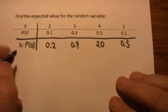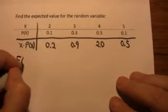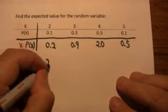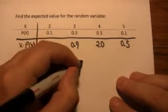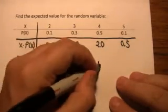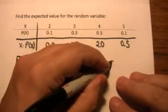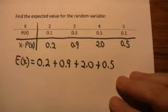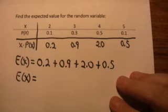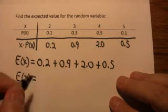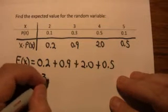Now by definition, the expected value of x is just the sum of all those products. So once you get that last row written down, all you've got to do is stick a plus sign in between all those numbers and add them up. If you don't feel confident doing it in your head, you can do it on the calculator. But when you add up all those numbers, you end up with 3.6.